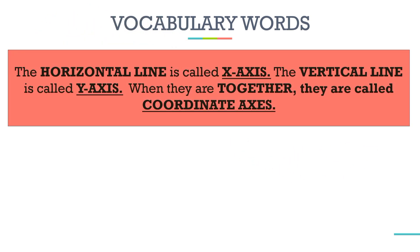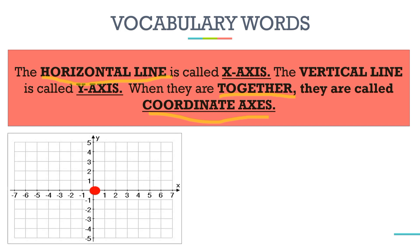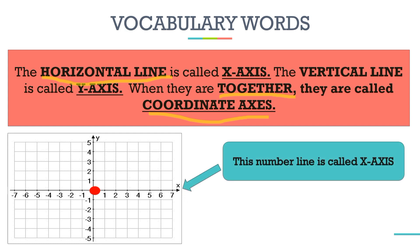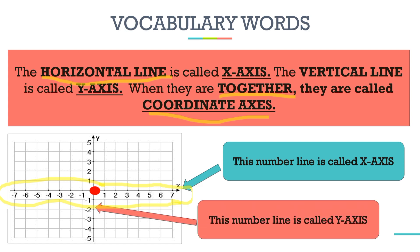The horizontal line is called the x-axis. The vertical line is called the y-axis. When they are together, they are called the coordinate axis. So in the given figure, this horizontal number line is called the x-axis, and this vertical number line is called the y-axis.